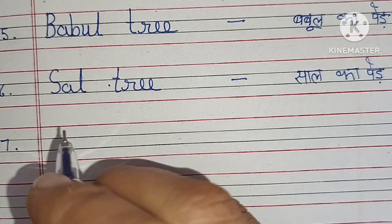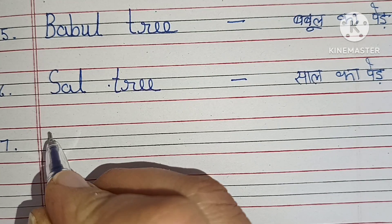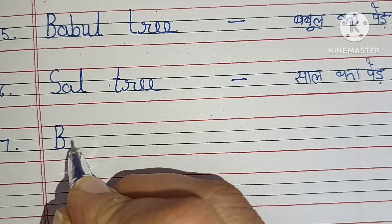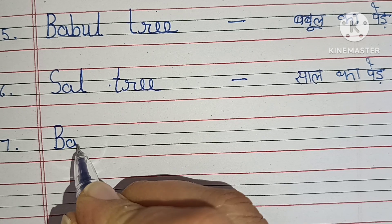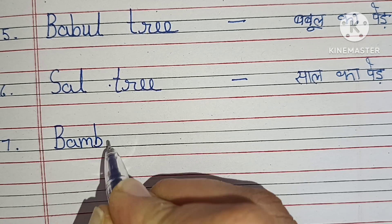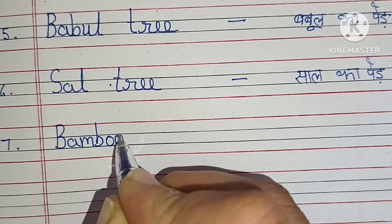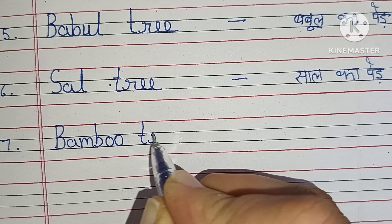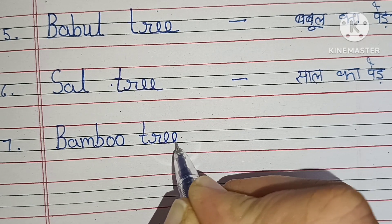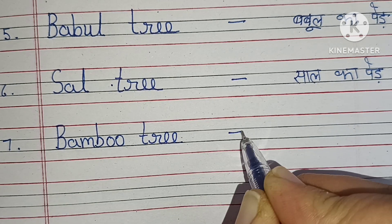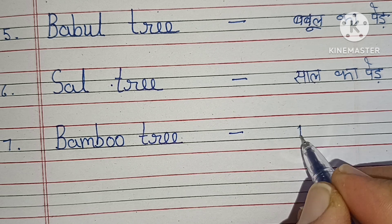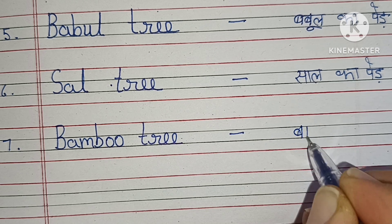Number 7: Bamboo Tree. B-A-M-B-O-O, Bamboo Tree. Bamboo Tree means Baans Ka Paid.